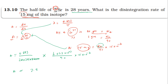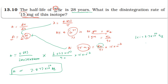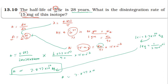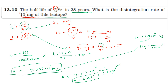The result is approximately 7.87×10¹⁰ disintegrations per second. Converting to Curie: 1 Curie equals 3.7×10¹⁰ disintegrations per second. So activity = 7.87×10¹⁰ divided by 3.7×10¹⁰, which gives approximately 2.13 Curie. So for 15 milligrams of Sr-90, the disintegration rate or activity is about 2.13 Ci.